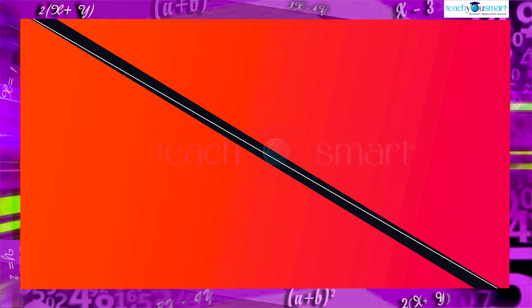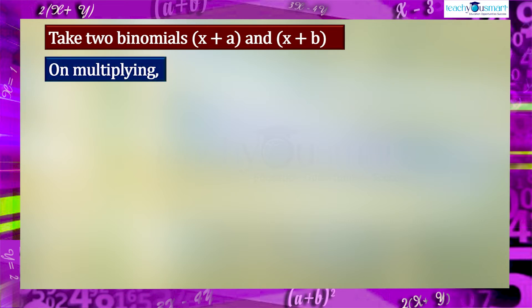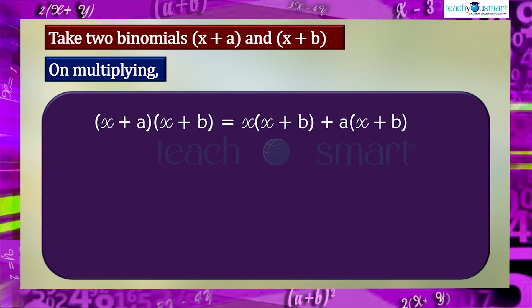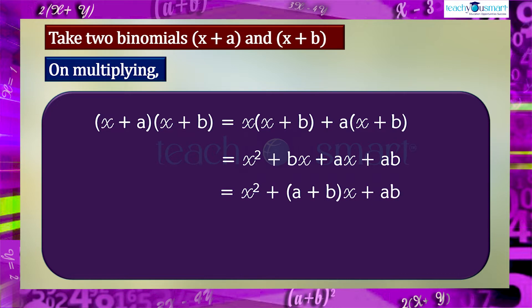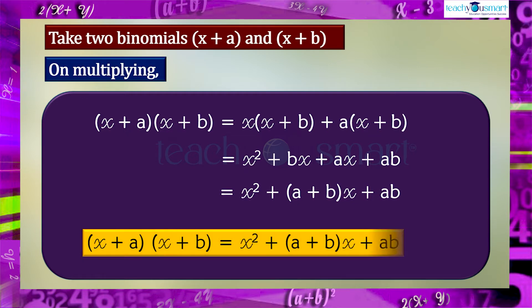Let's move to another identity. Take two binomials (x+a) and (x+b). On multiplying, we get (x+a)(x+b) = x(x+b) + a(x+b) = x²+bx+ax+ab = x²+(a+b)x+ab.